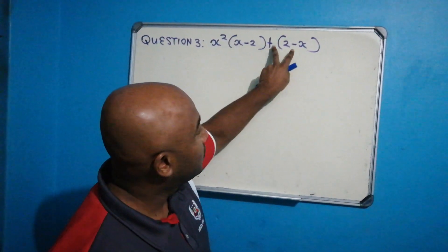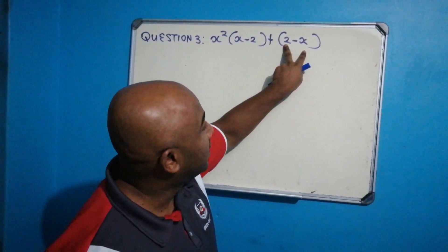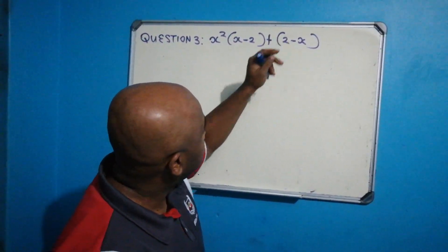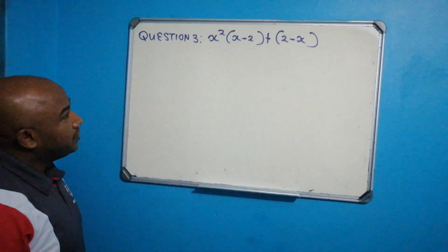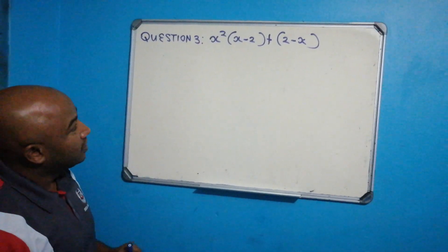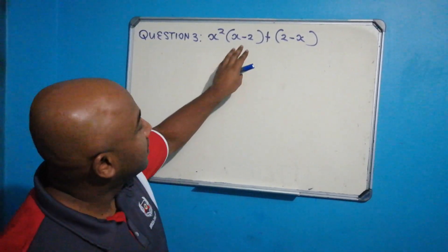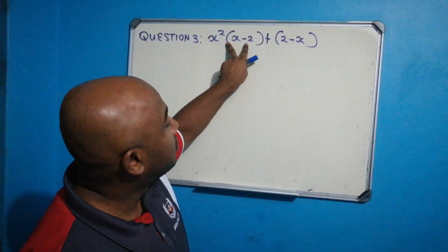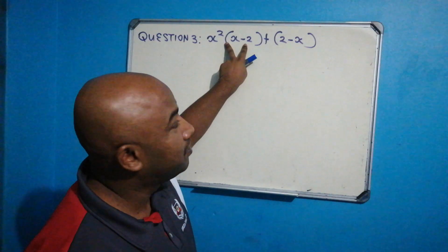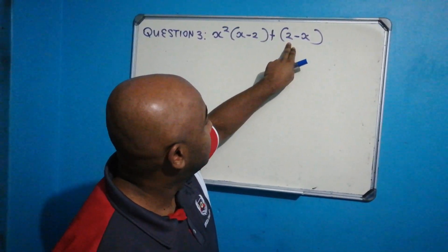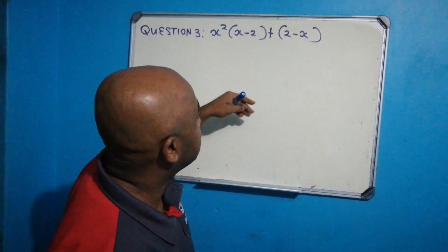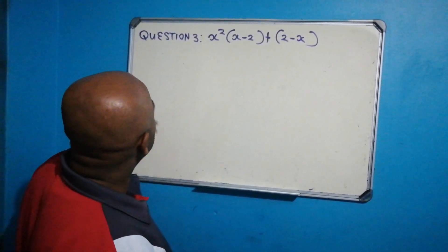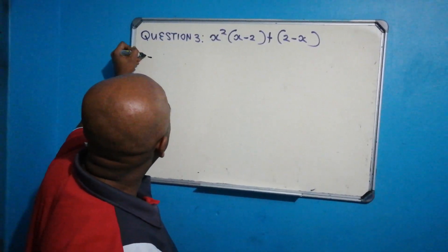So what do you notice? This is x minus 2 and this is 2 minus x — they're not common at the moment. But what we can do is manipulate this in order to make 2 minus x become x minus 2, or you could make x minus 2 become 2 minus x. Let's choose the first option.